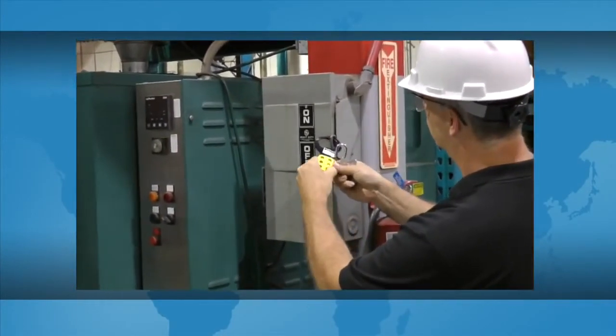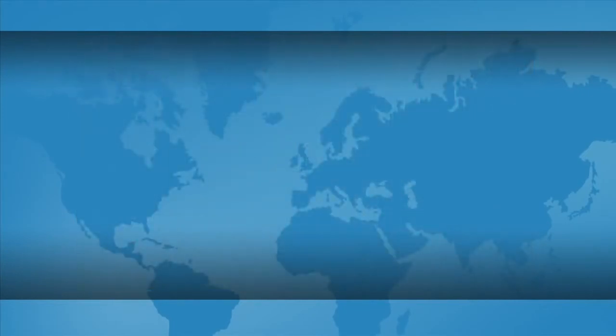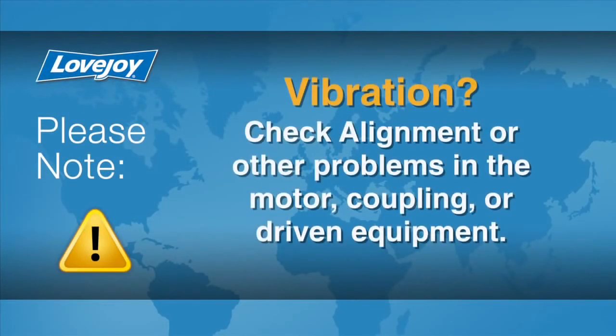The equipment can then be started up and tested. The coupling and equipment should run smoothly. If vibration is detected, it could indicate that there is an issue with alignment or other problems. These could exist in the motor, coupling, or driven equipment, and should be resolved prior to placing this coupling into operation.